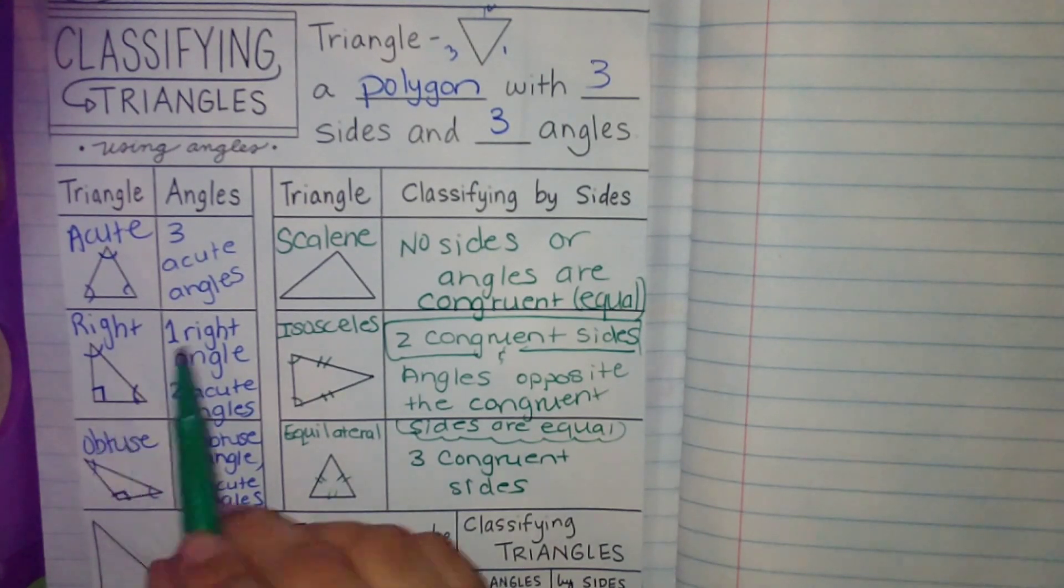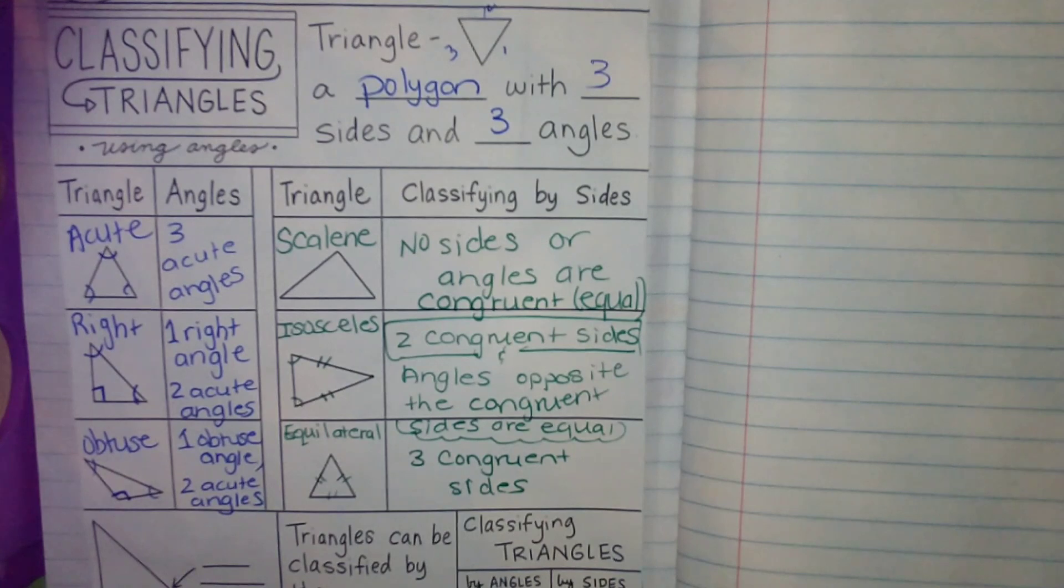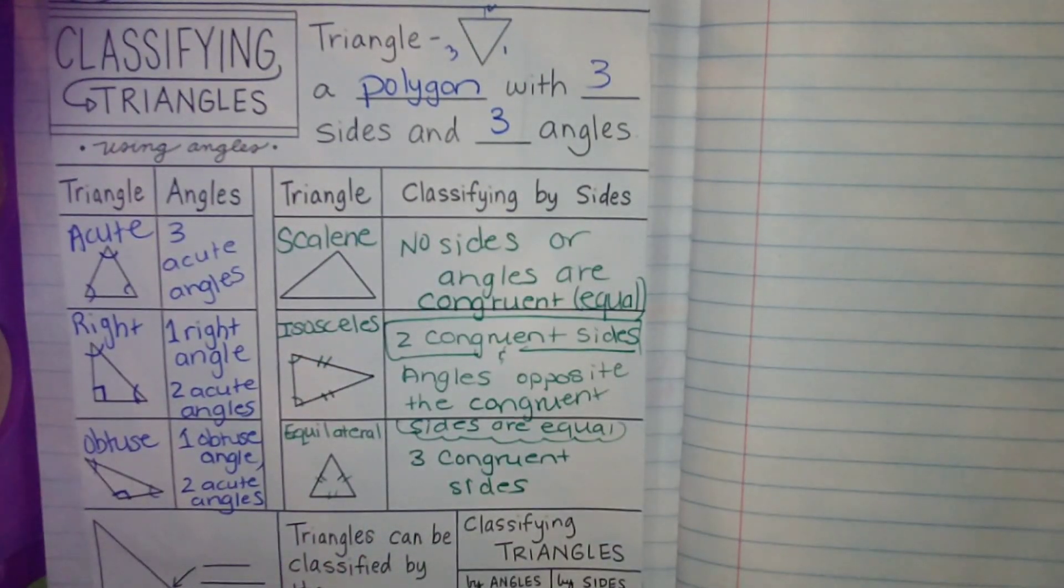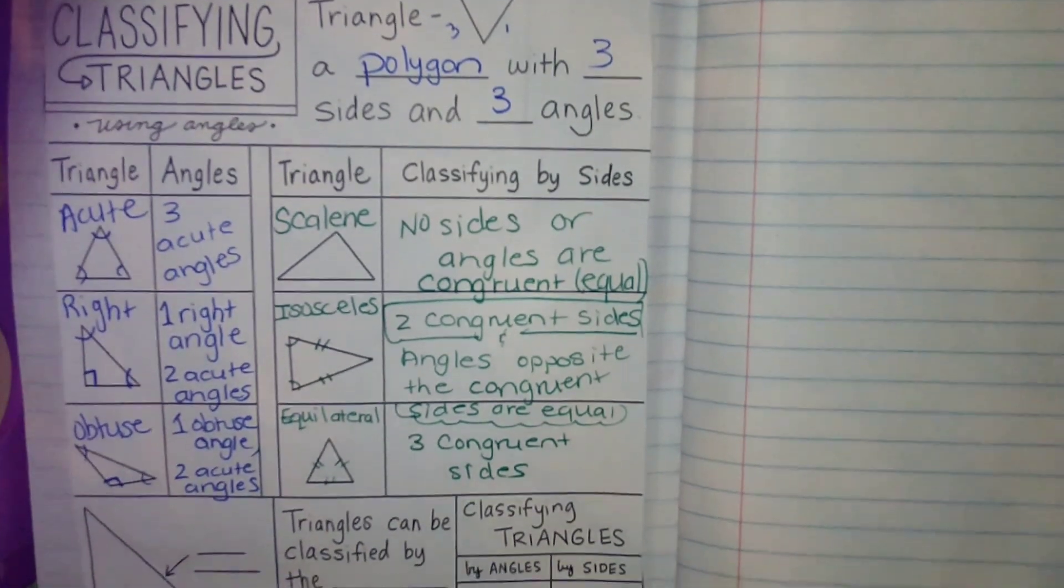So I can have a right scalene. I can have an acute isosceles. So we can have a mixture of them. One from this column, one from that column. And I'll show you some examples. Now at this point, if you need to pause the video, you're more than welcome to catch up, but I'm going to keep going.